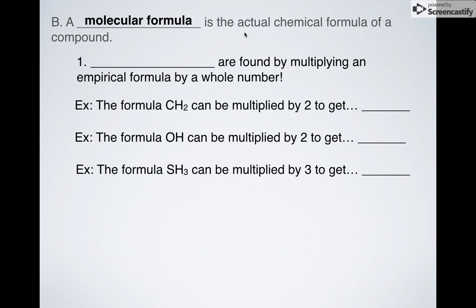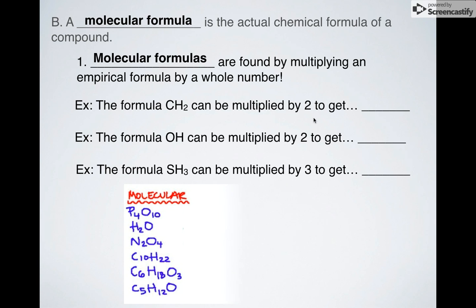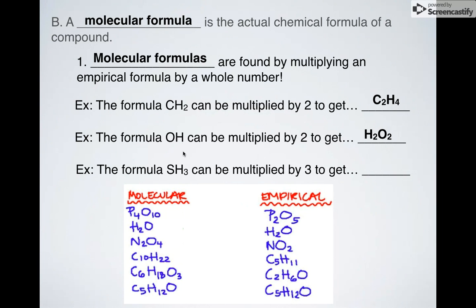What are molecular formulas? Those are the actual chemical formulas. And the way you find them is by multiplying the empirical formula by a whole number. So let's go backwards. I had CH2 as my empirical formula. If I multiply those by two, what I end up getting is C2H4. OH, if I multiply it by two, I get H2O2. And then SH3, if I multiply it by three, I get S3H9.